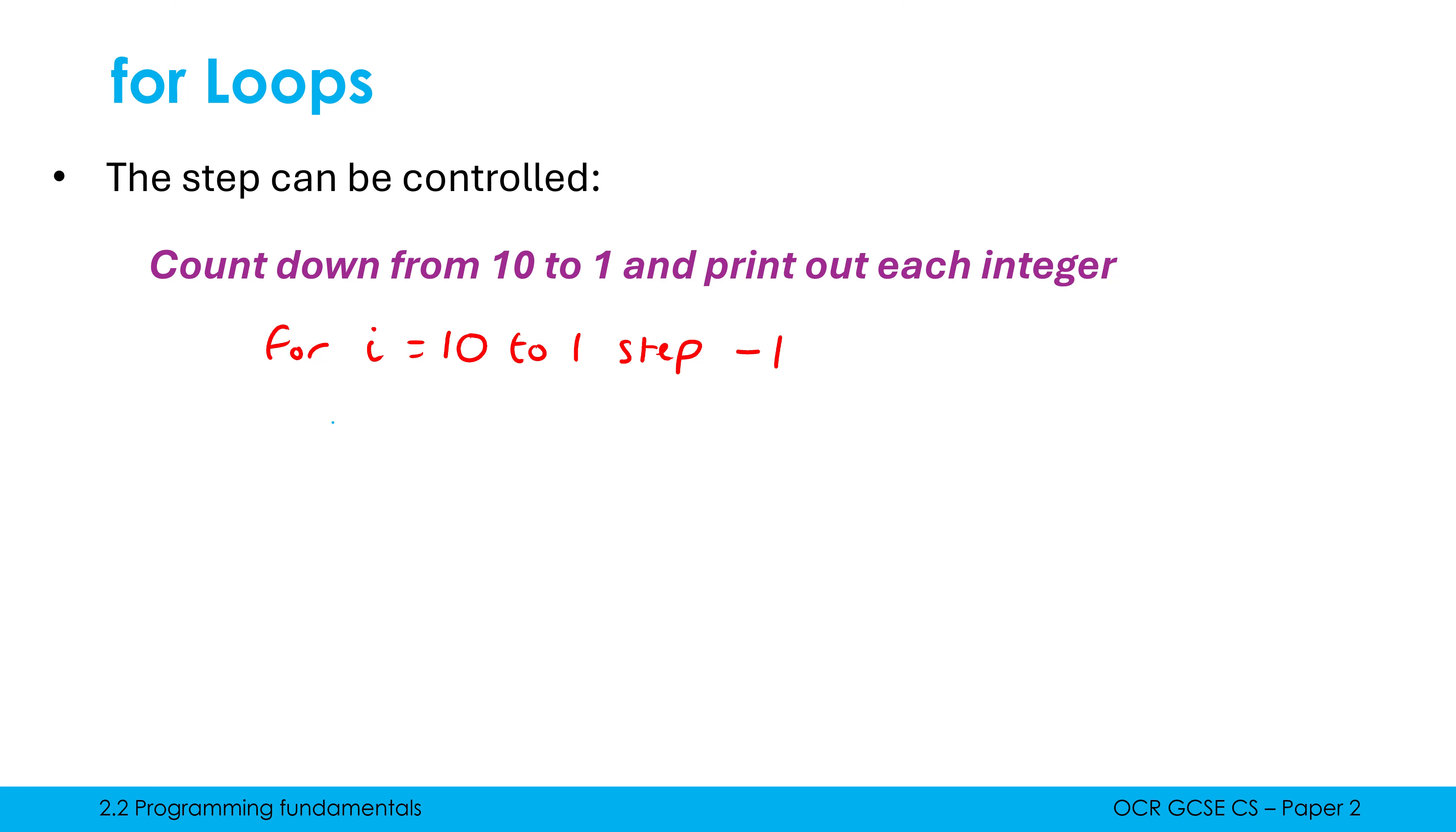I then would do an indentation on my page. Really important that you keep it as a gap at the start of this line. I would then print out i, which is my loop counter. Initially, i is 10. Then it'll be nine, then it'll be eight, all the way down to one. And in OCR URL, we need to dedent. So go back against our margin, and then write next i. And that's how we'd count down from 10 to one.